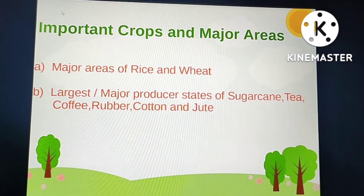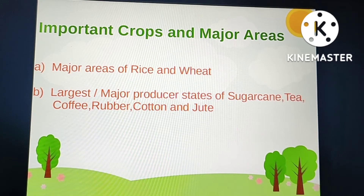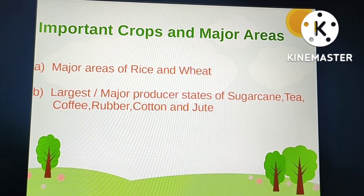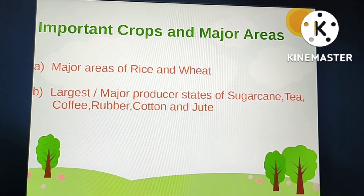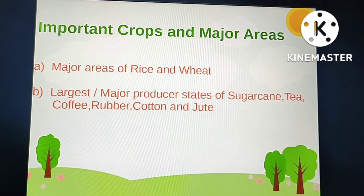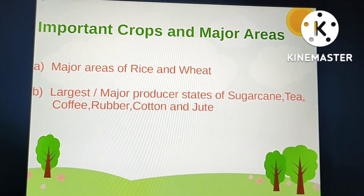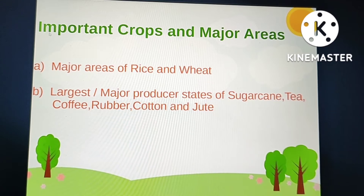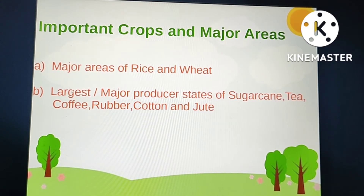Hello everyone, welcome to Success Show. Today's video is on agriculture map work. We will be doing important crops and their major areas. First is major areas of rice and wheat, and second part is the major producer states of sugarcane, tea, coffee, rubber, cotton, and jute. We divide these into two categories: sugarcane, tea, and coffee are food crops other than grain, and rubber, cotton, and jute are non-food crops.